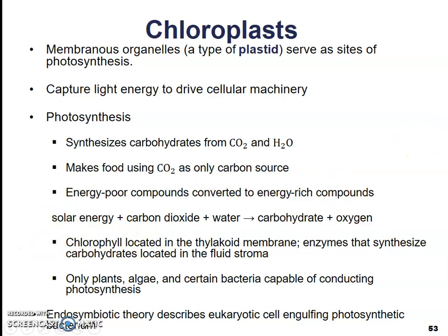Chlorophyll is located in the thylakoid membrane — those flattened sacs from the previous slide, that's where the chlorophyll is found. Enzymes inside that thylakoid synthesize carbohydrates in the liquid called the stroma. Now, only plants, algae, and certain bacteria are capable of doing photosynthesis. The endosymbiotic theory describes how eukaryotic cells engulfed those photosynthetic bacteria, and they developed a symbiotic relationship where both the cell and the chloroplast benefit.